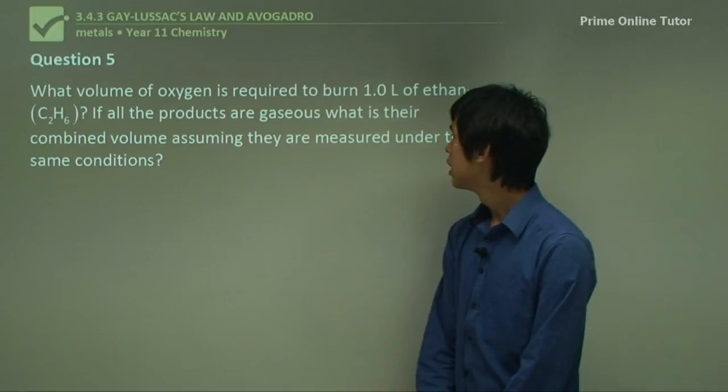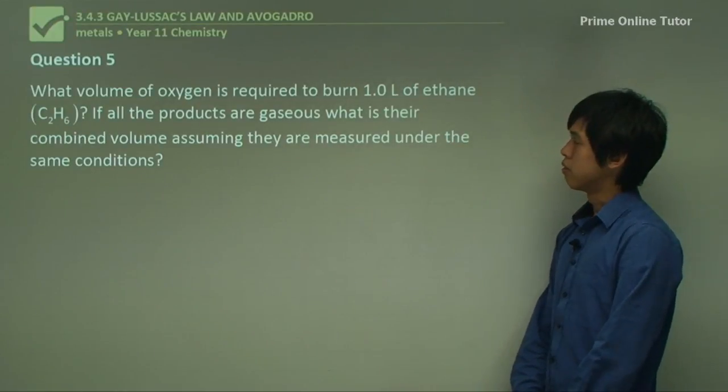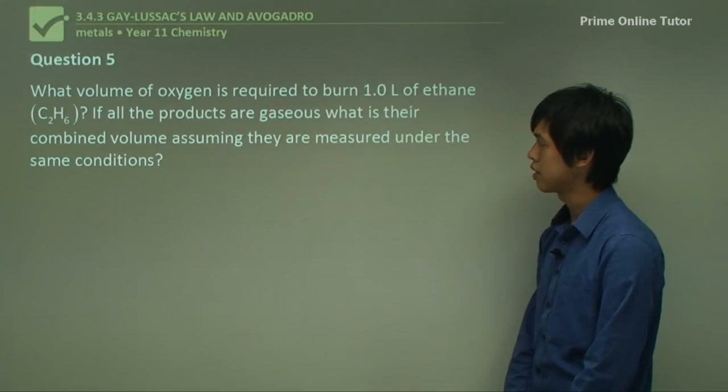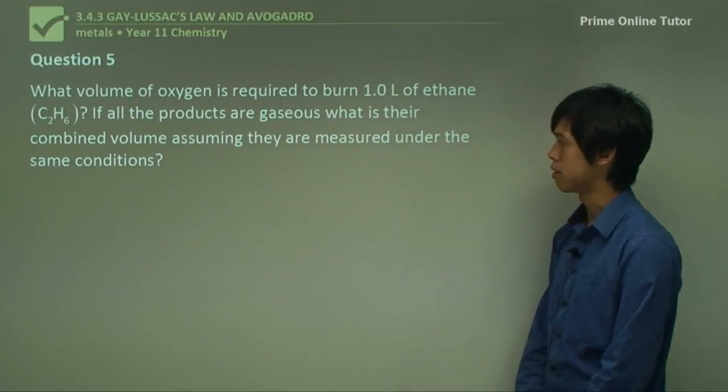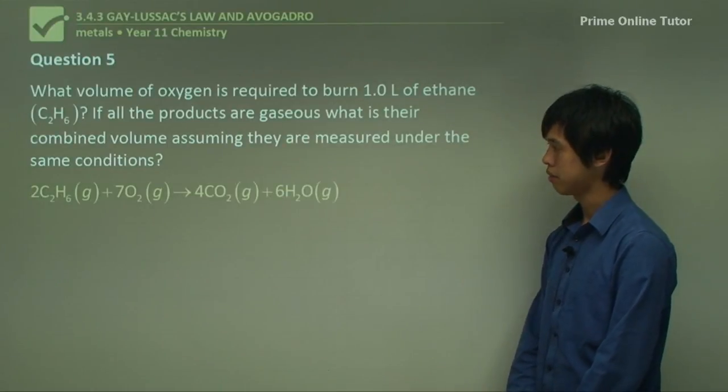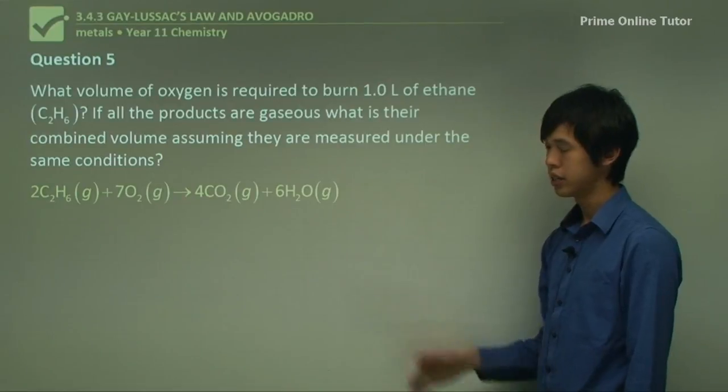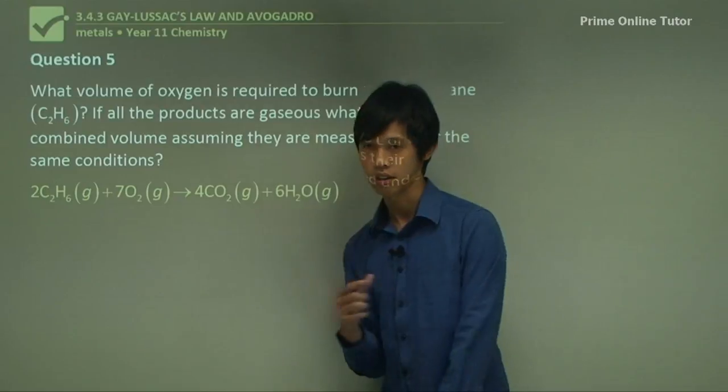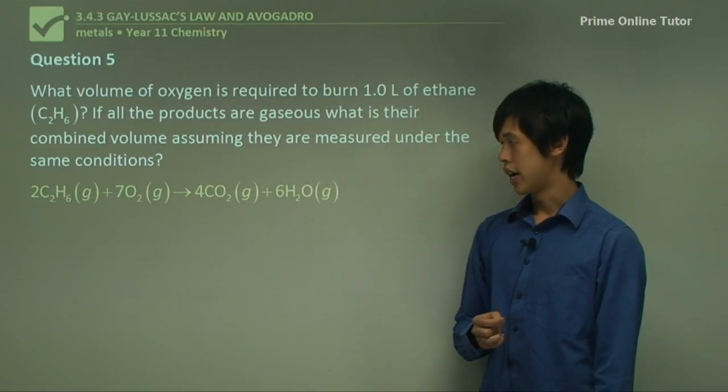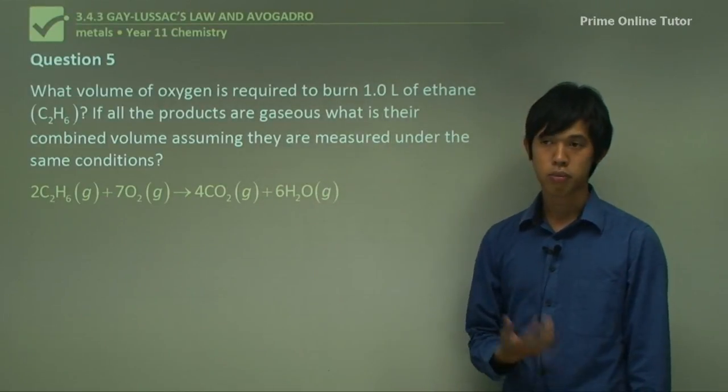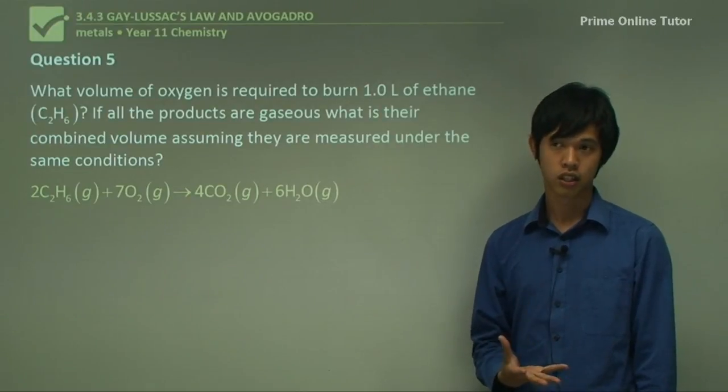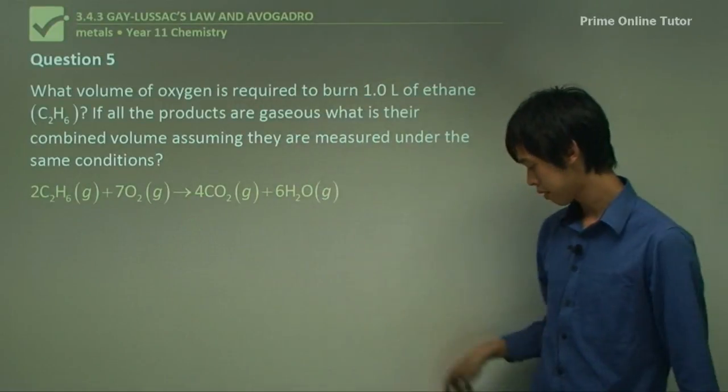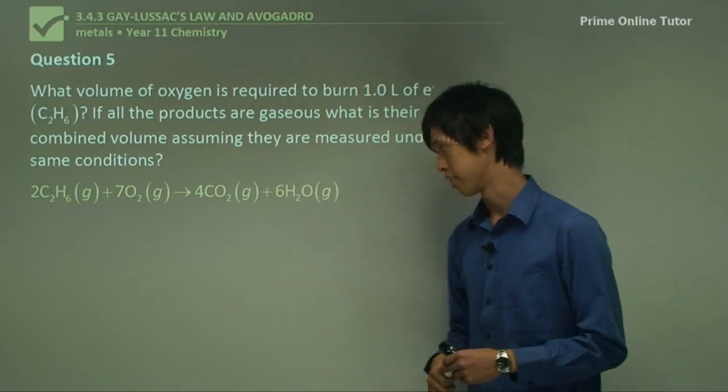And question 5, what volume of oxygen is required to burn 1 liter of ethane? If all the products are gaseous, what is their combined volume assuming they are measured under the same conditions? So again, we start with our chemical equation. And remember that we are doing complete combustion here. So we've got CO2 and H2O as our only products. And if you want to go through the balancing steps, I suggest you look at the video on balancing chemical equations. So this comes out of that. But I'll just do it quickly so that you can sort of see what's happening.